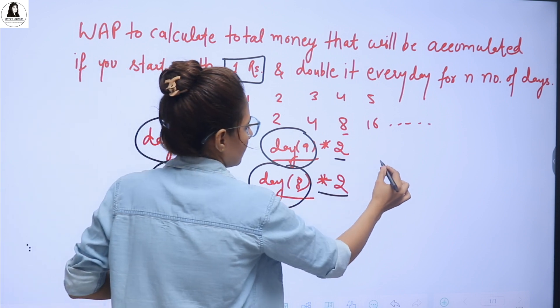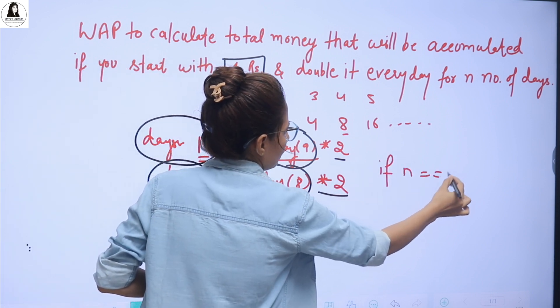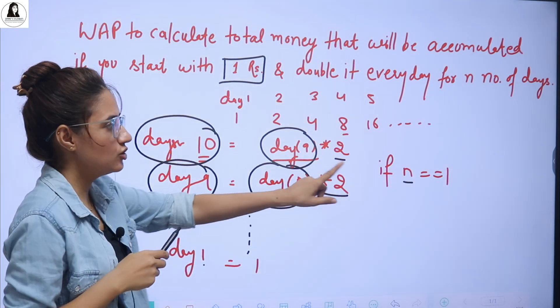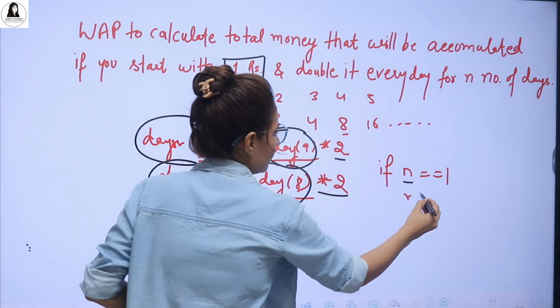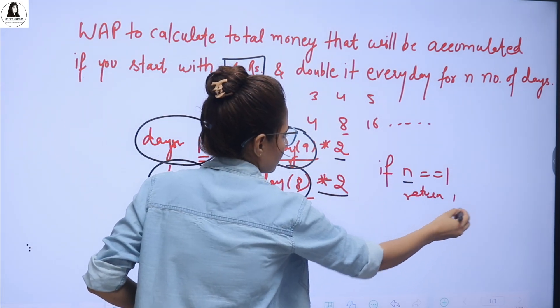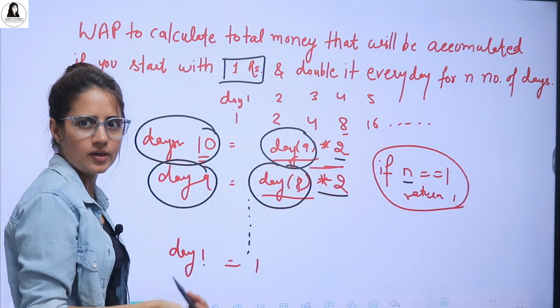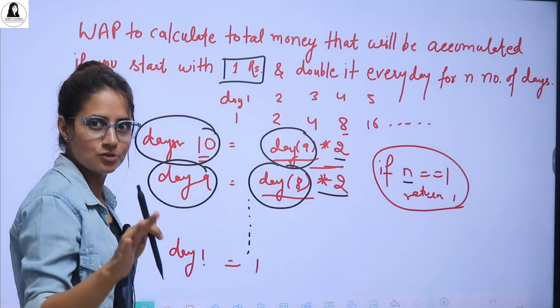So if, if n is equal to, equal to 1, I mean n is here indicate number of days. So number of days is 1. So n is equal to, equal to 1, simply return 1. This is the base condition. Otherwise, this is the base case. This is the recursive case. Try this out. Now close the video and try this out.